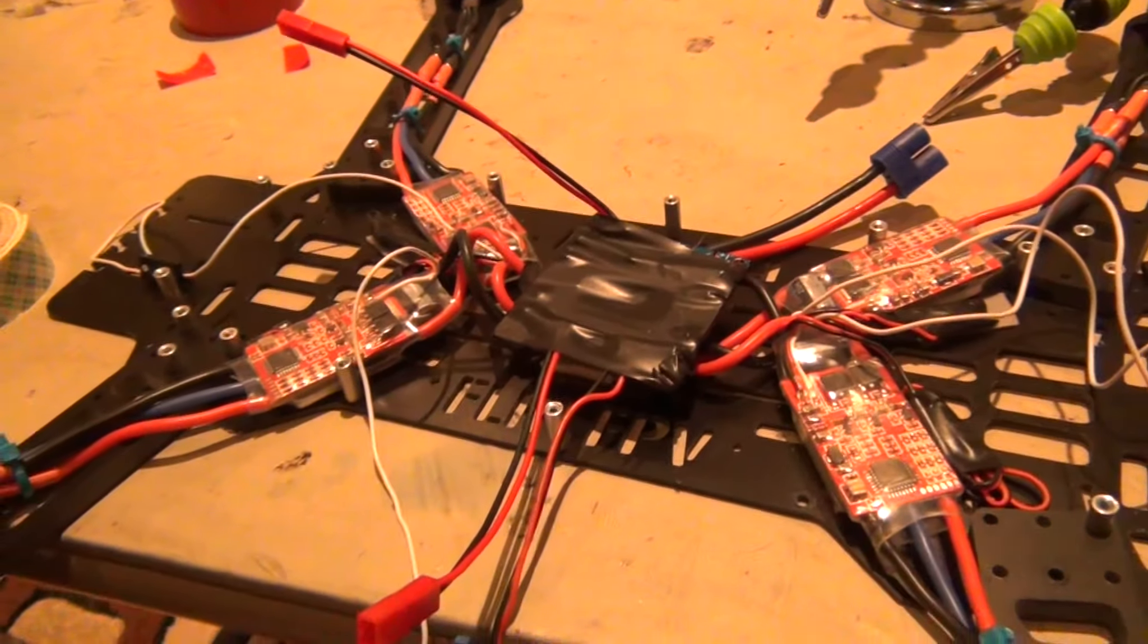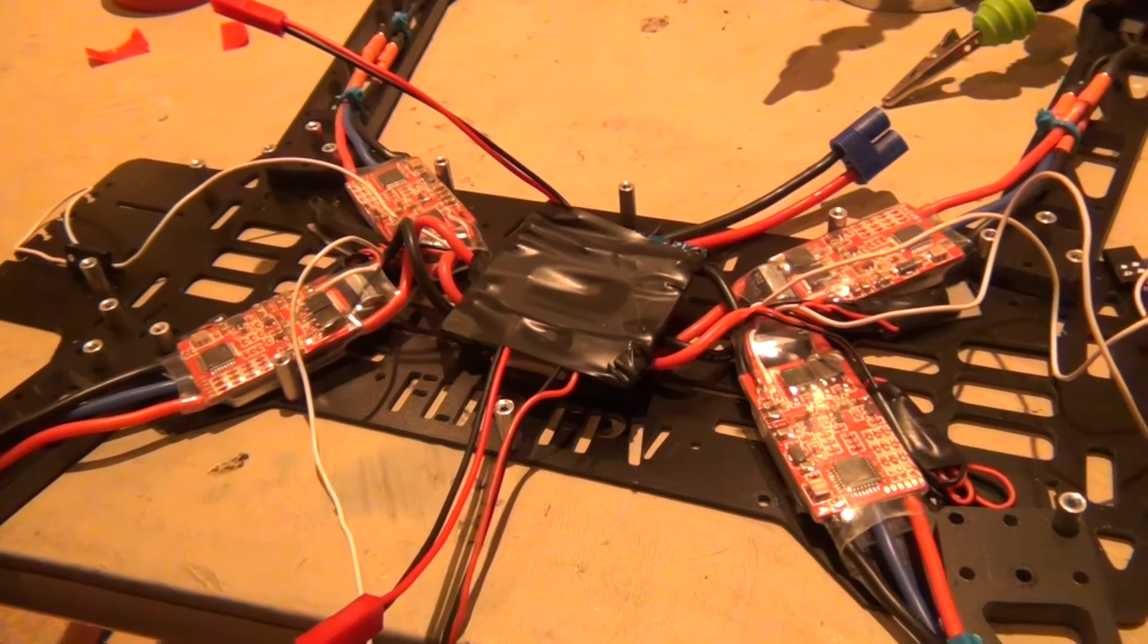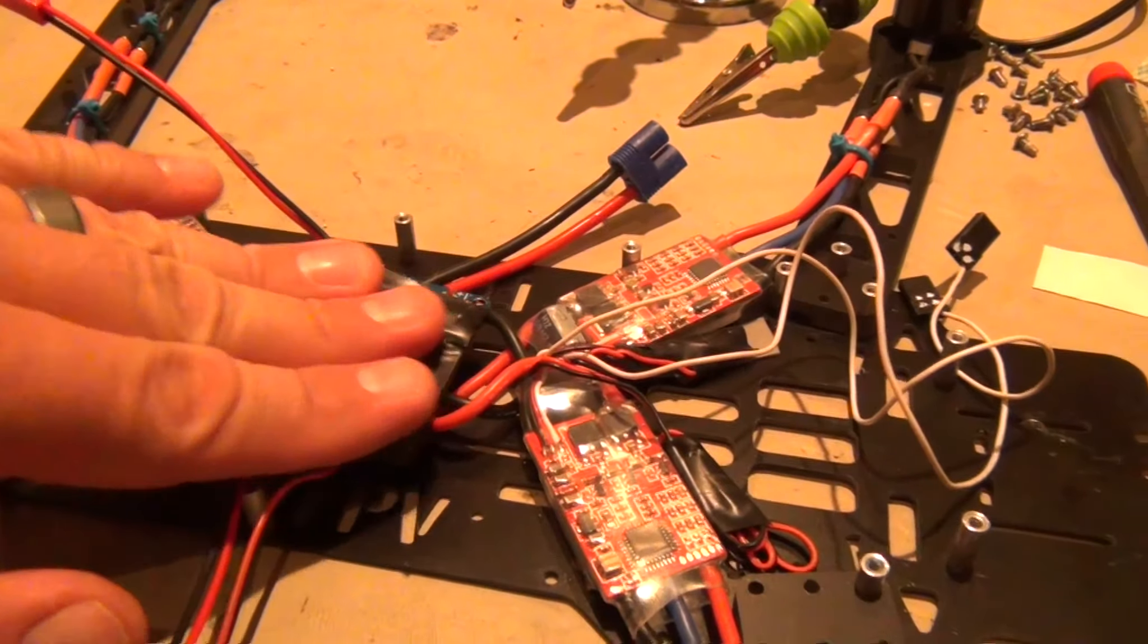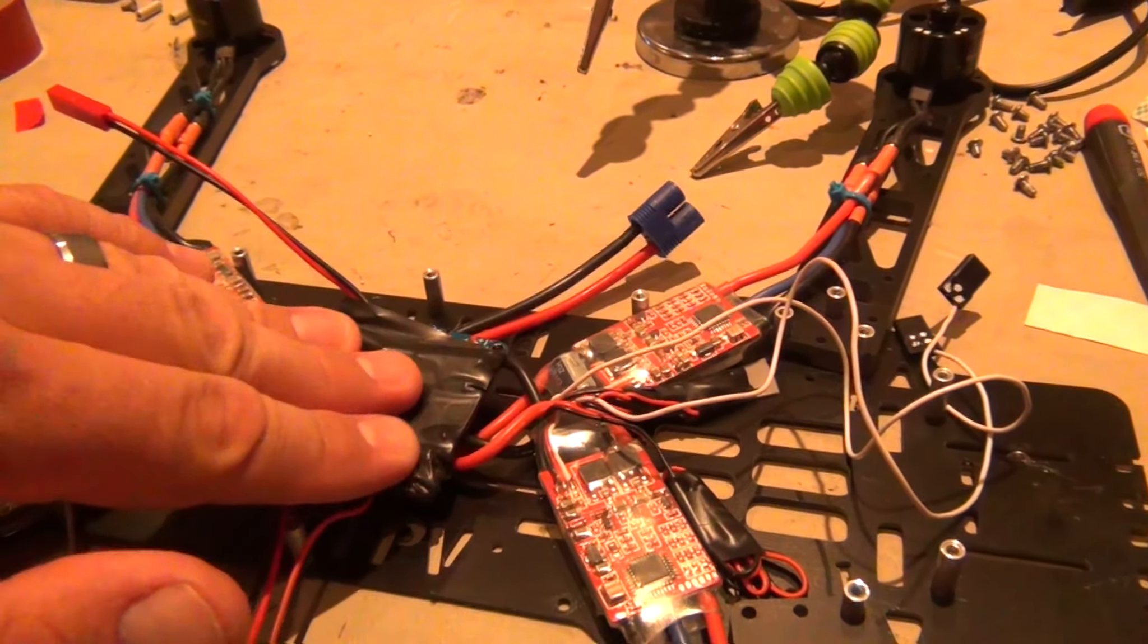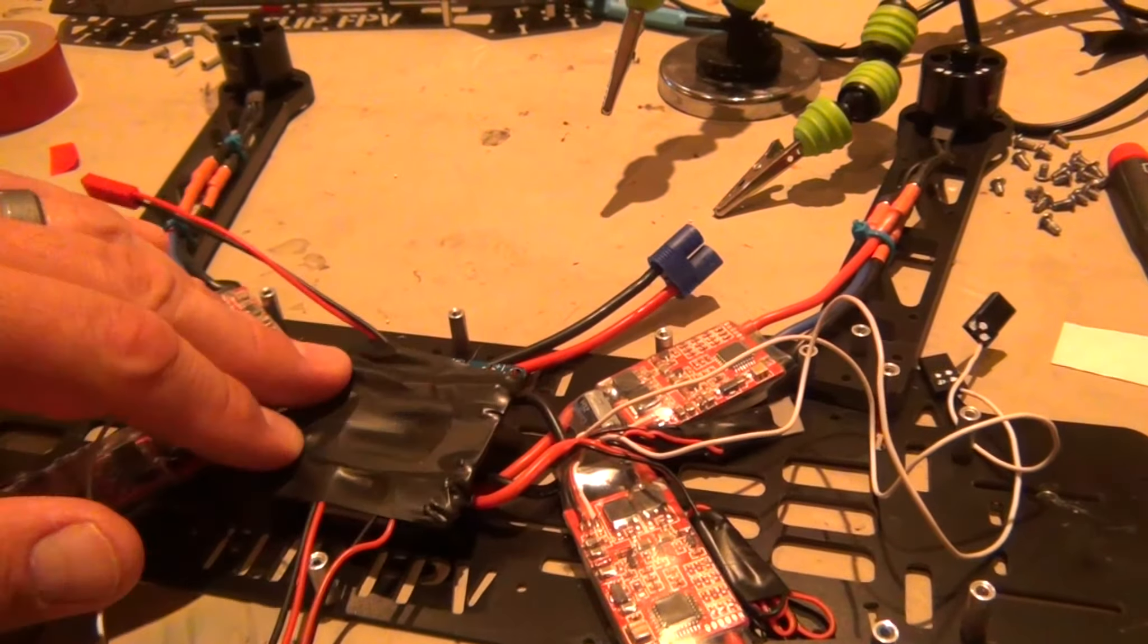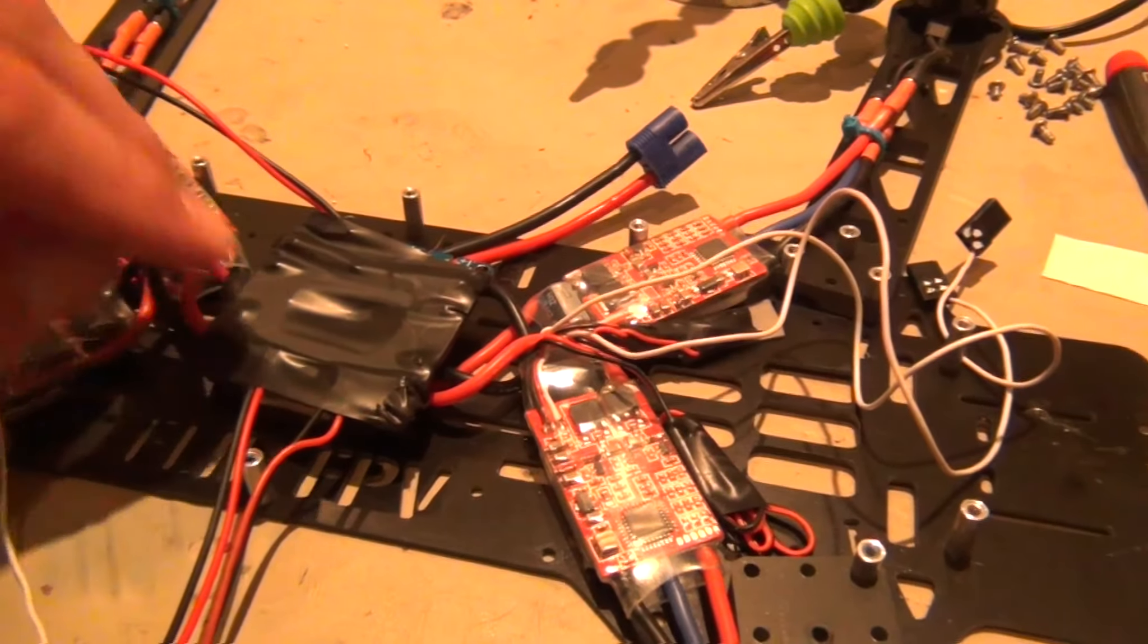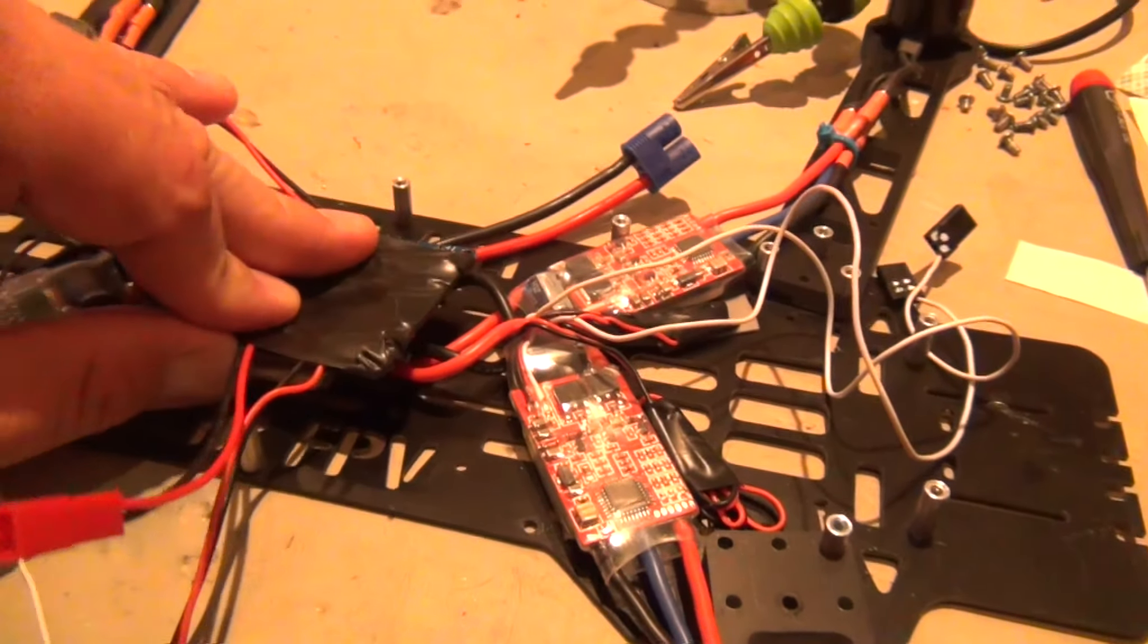Hey guys, just got everything soldered up and my distribution board taped up. Since these solder joints are open, I don't want it bumping around or grounding out. I've got some foam tape underneath here.